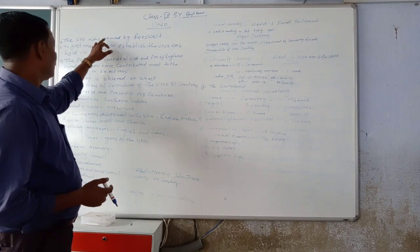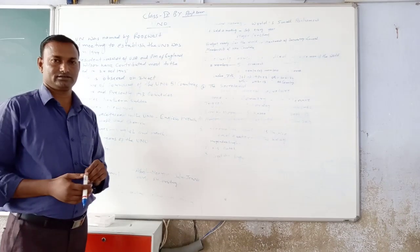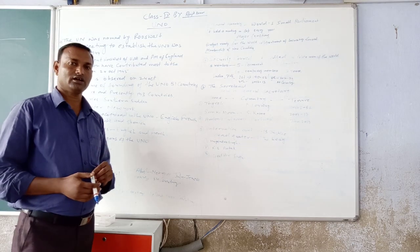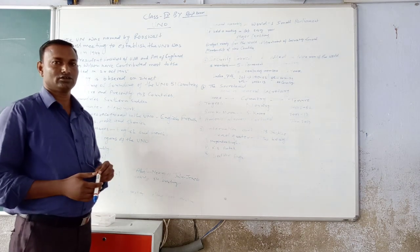the United Nation was named by Roosevelt. United Nation ka jo naam karan kiya tha, woh Roosevelt.